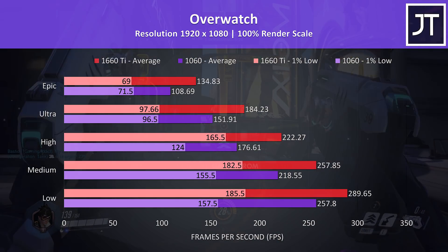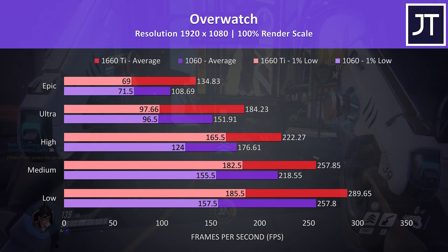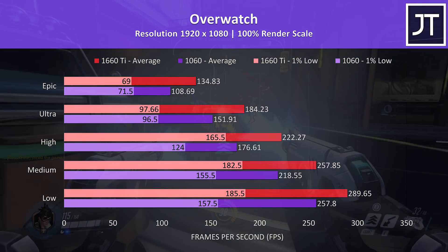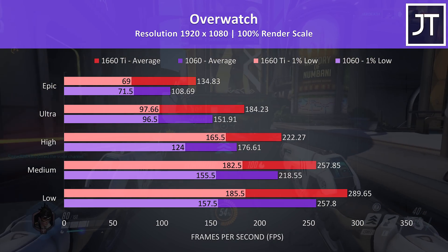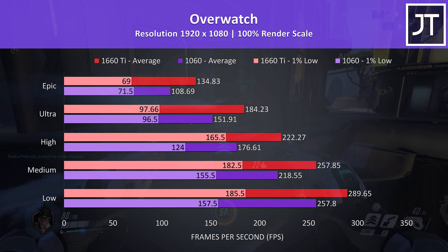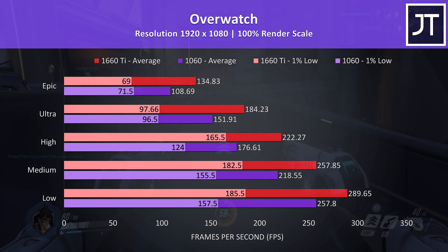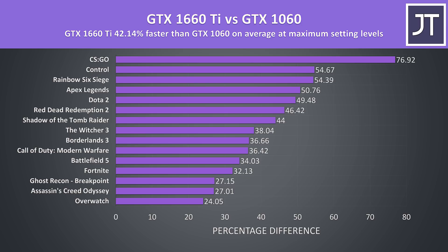Overwatch was tested in the practice range, which allows a more accurate comparison. There was minimal difference to 1% lows at ultra and epic settings, with the 1660 Ti 24% ahead in averages at epic. Looking at all 15 games tested at the highest setting preset, on average the 1660 Ti was 42% faster when compared to the 1060 — a tiny sliver of that may be due to the processor difference, but it'd be very minor. Regardless, the 1660 Ti is offering significantly better performance in games.